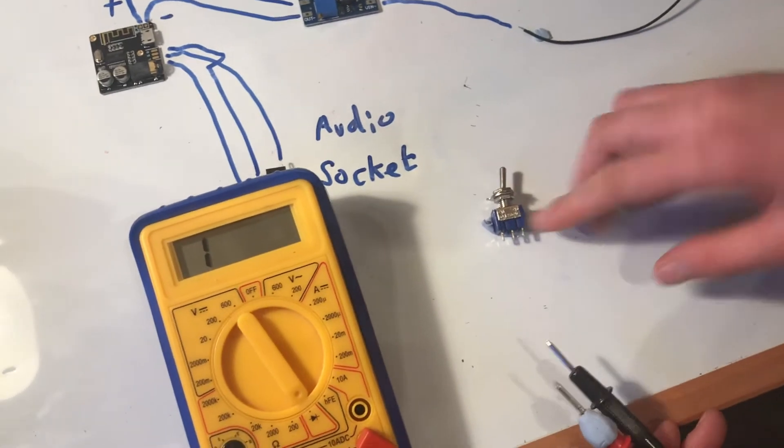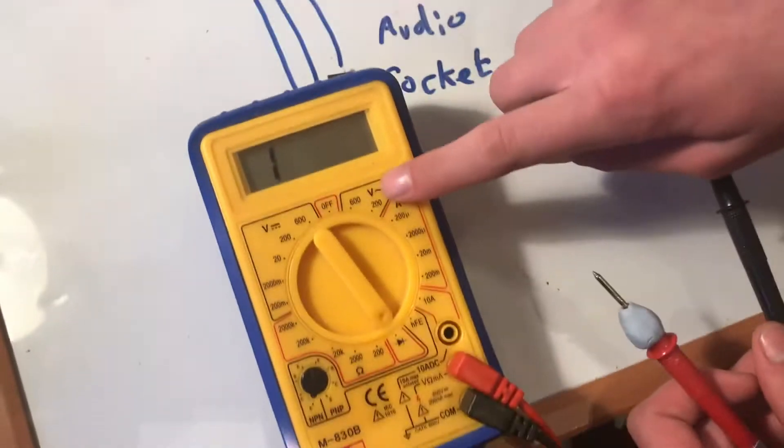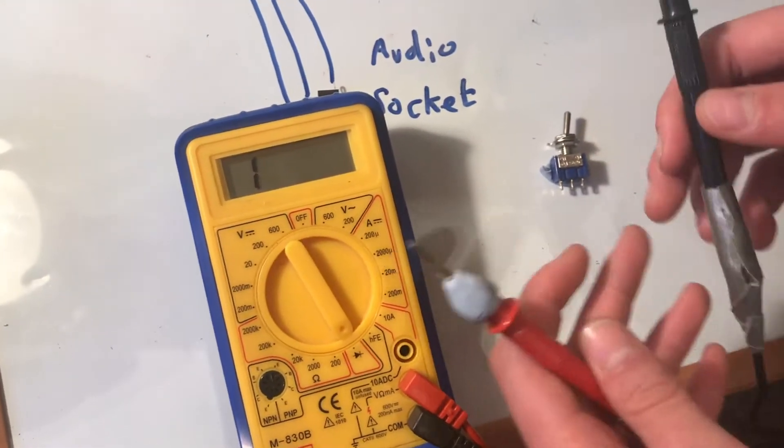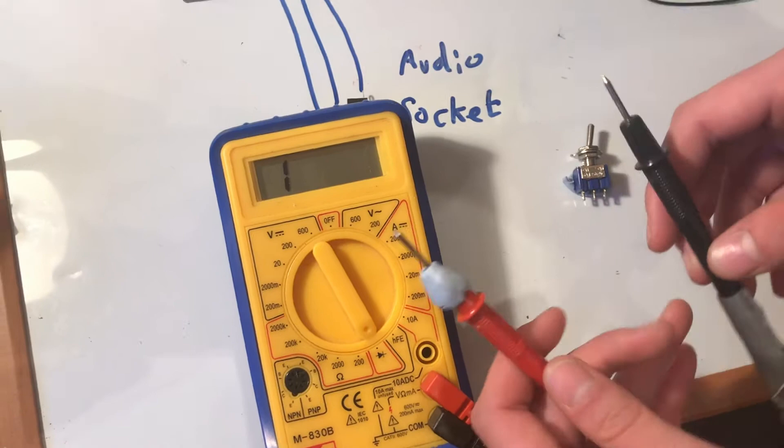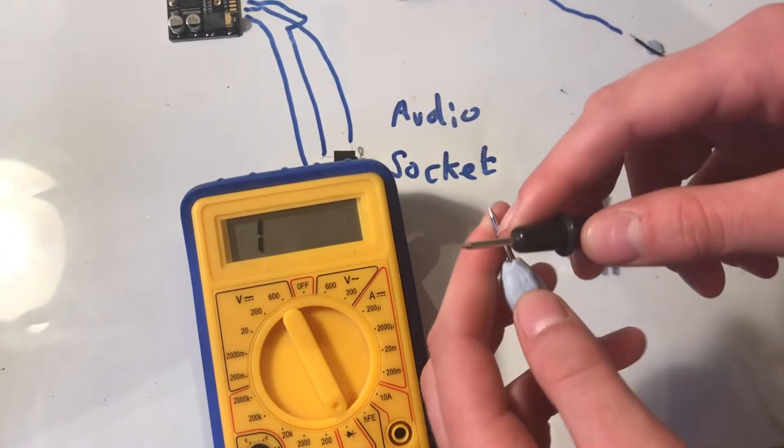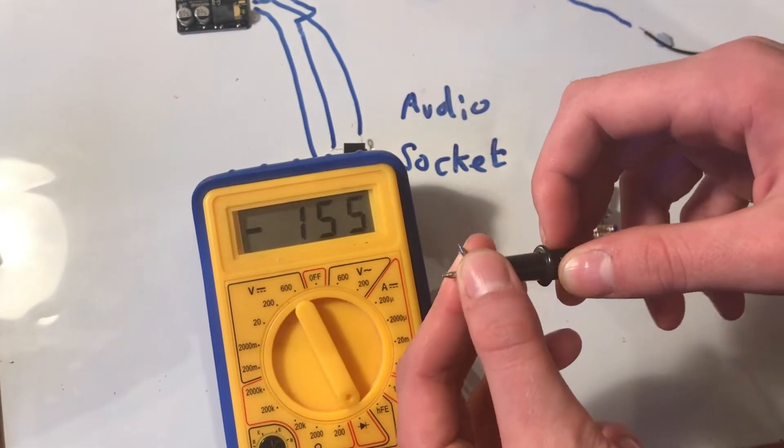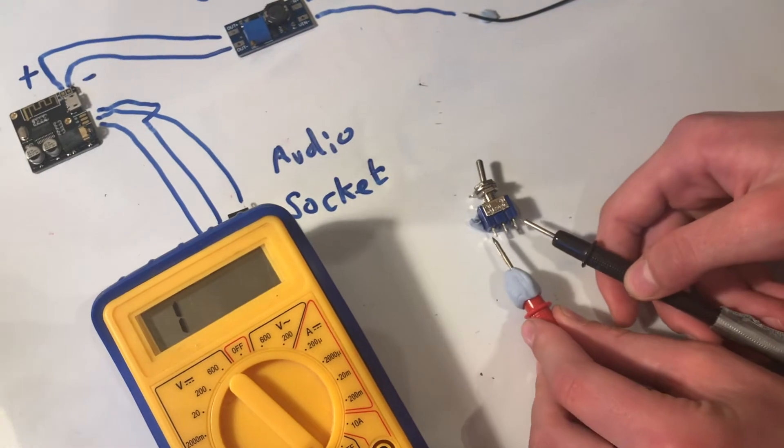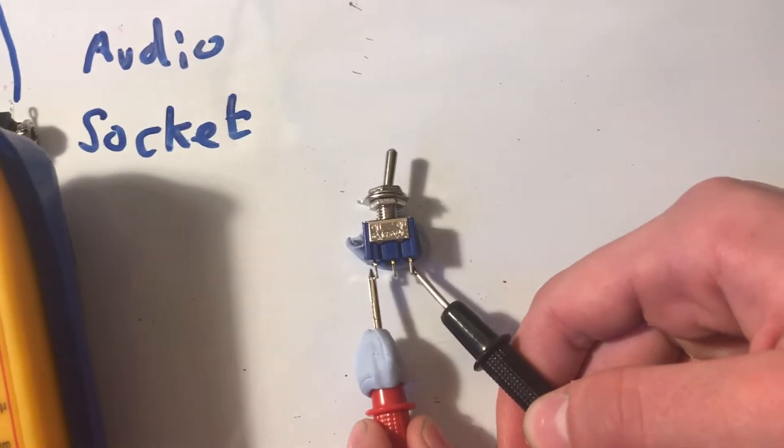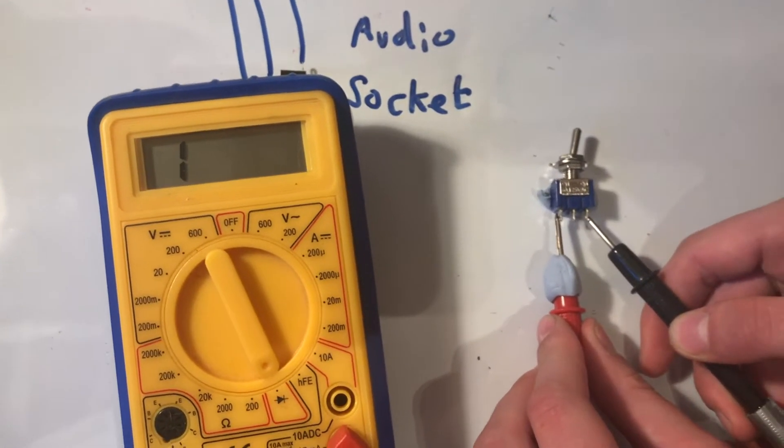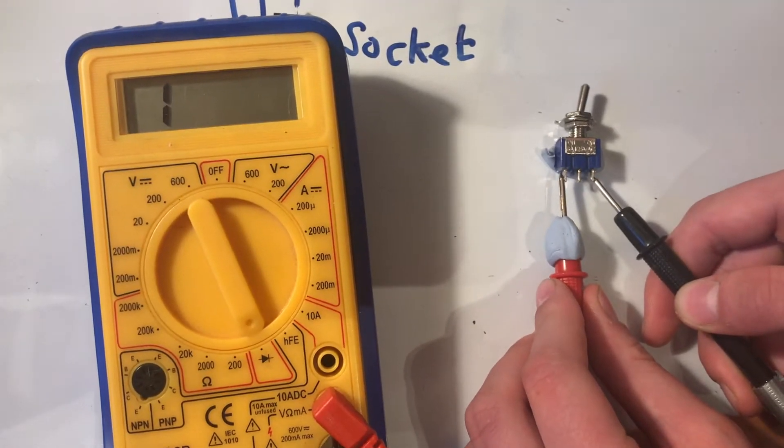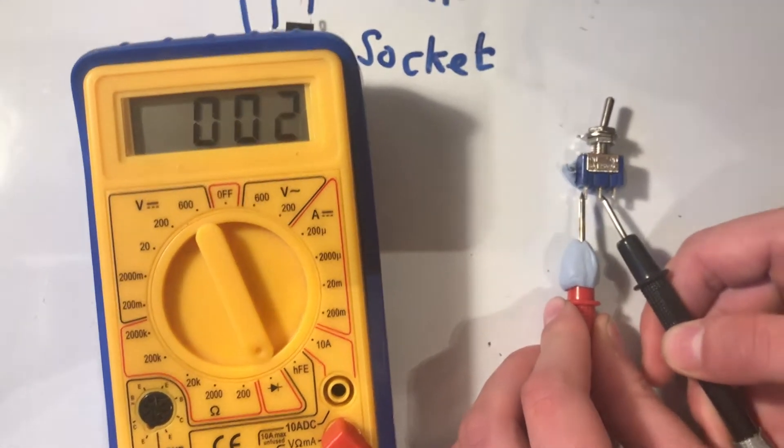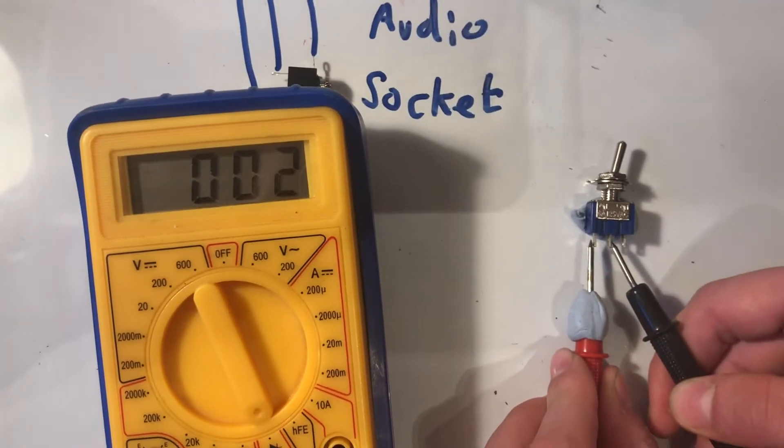I've never used this switch before so we're going to figure out how it works. I have my multimeter here. At the moment these two probes aren't connected and we're showing one. And then when we connect them on our multimeter we show a very low number. If I connect these two outer legs of our switch, our multimeter reads one, which means these two outer legs aren't connected. So let's try these two legs, the middle and the left leg. That's showing a very low number, which means they're connected. Let's try the other two. So it's the middle and the right, and it's showing one, which means that they aren't connected.